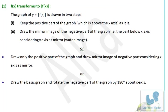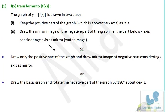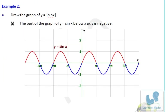The graph of y = |f(x)| is drawn in two steps: keep the positive part of the graph — that is, the part above the x-axis — as it is, and draw the mirror image of the negative part — the part below the x-axis — considering the x-axis as the mirror. In other words, you take the water image of the below-x-axis portion.